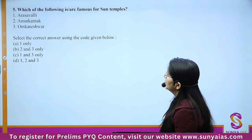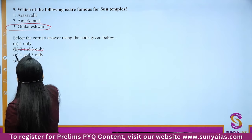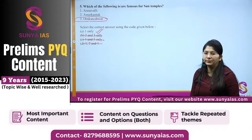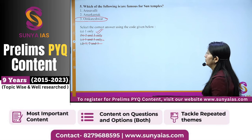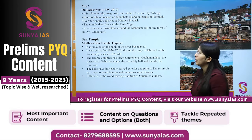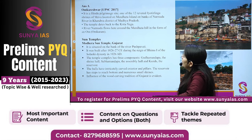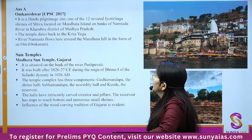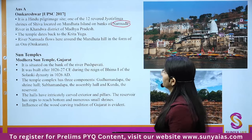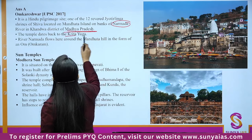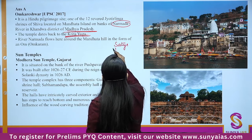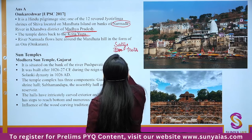Question: building Kalyan Mandap was a notable feature in the temple construction of which kingdom — Chalukya, Chandela, Rashtrakuta, or Vijayanagara? This is about Vijayanagara architecture. Hampi is a UNESCO World Heritage Site located near a town in Karnataka on the Tungabhadra River. The name is derived from Pampa, the old name of the Tungabhadra. Virupaksha Temple is dedicated to Lord Virupaksha (a form of Shiva). There is also a stone chariot in front of the Vijaya Vittala Temple, dedicated to Garuda, the vehicle of Lord Vishnu.